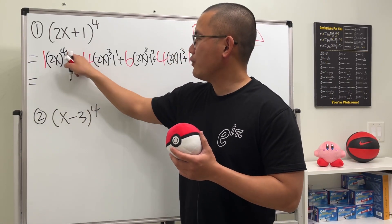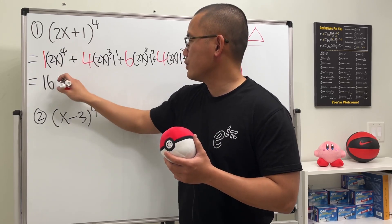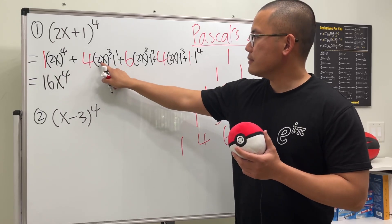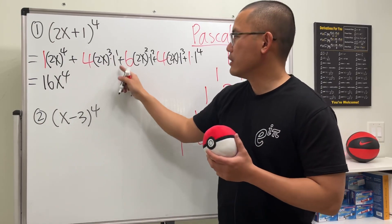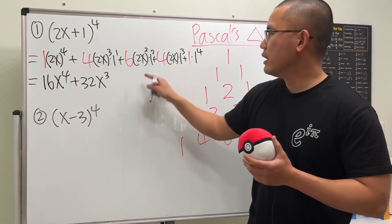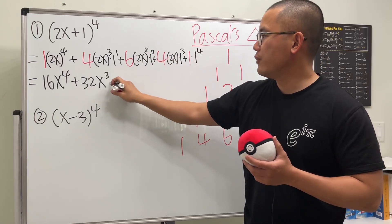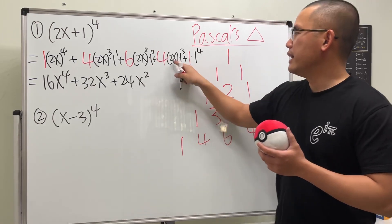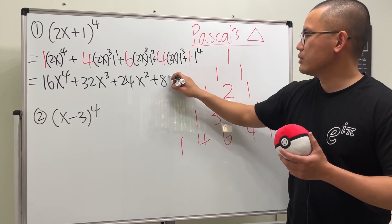Here we have 2 to the fourth power is 16. Times 1 doesn't matter. And then we have x to the fourth power. That's the first term. Next, 2 to the third power is 8. 8 times 4 is 32. Times 1 doesn't matter. So plus 32x to the third power. Continue. 2 to the second is 4. 4 times 6 is 24. So we add 24x squared.